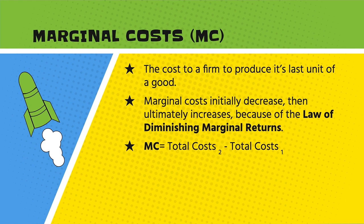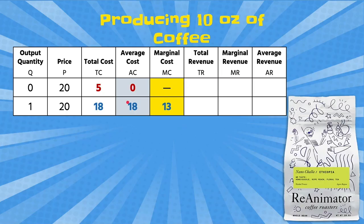To calculate marginal costs, it is the total cost of a current level of output minus the total cost of the previous level of output. So at an output level of two, marginal cost equals total cost at output two minus total cost at output one. At output level zero there is no marginal cost, but at output level one it's the total cost of that level minus the previous level.